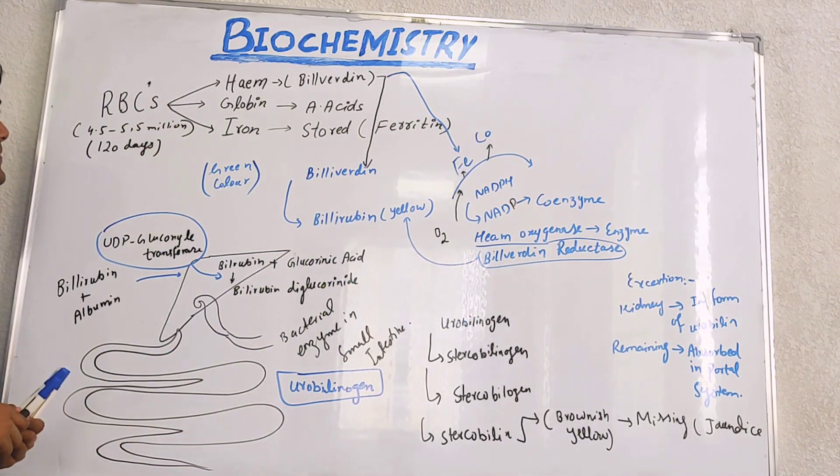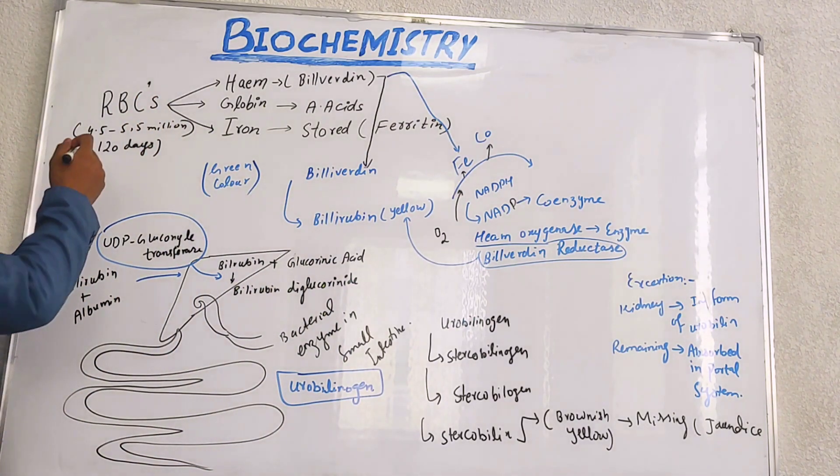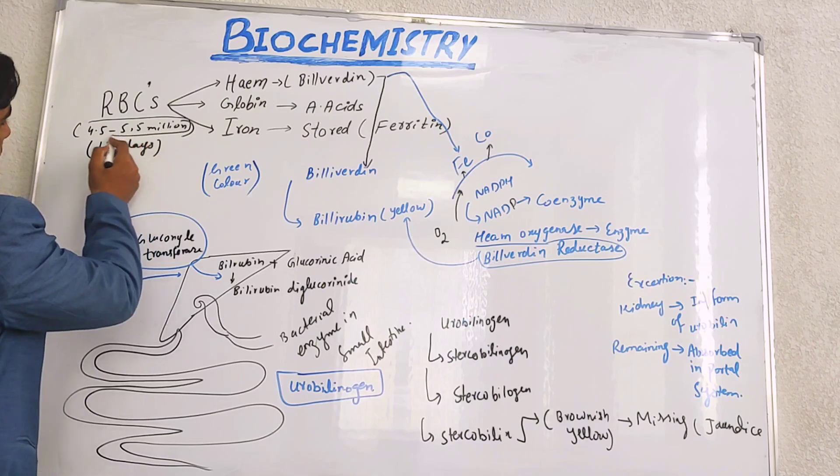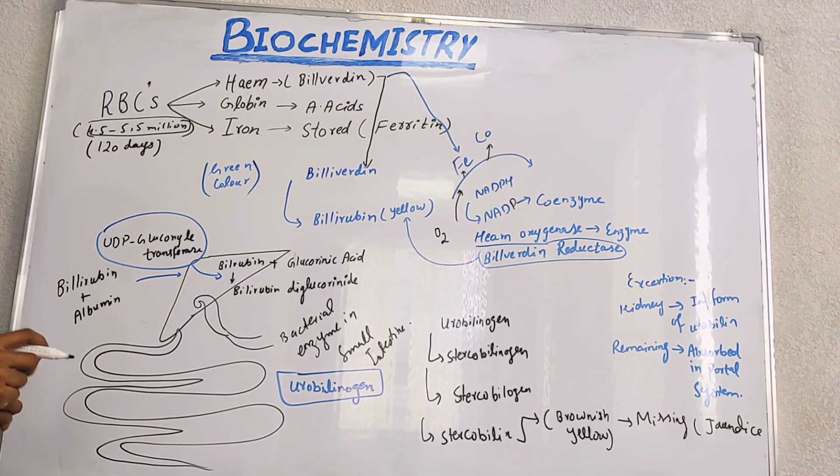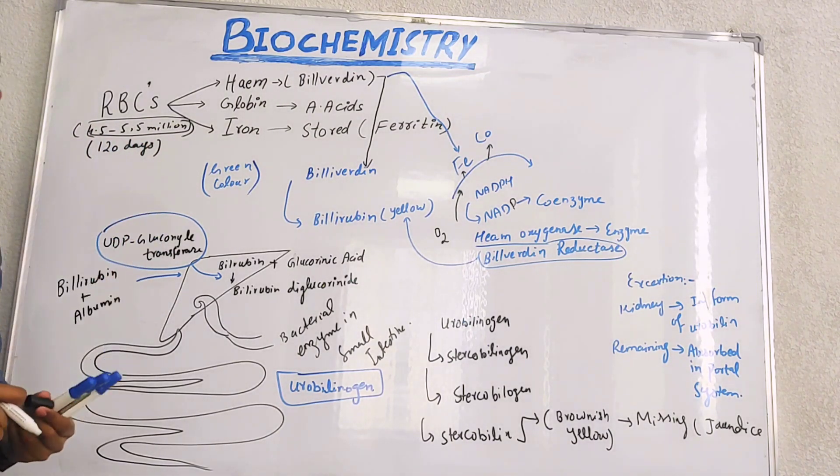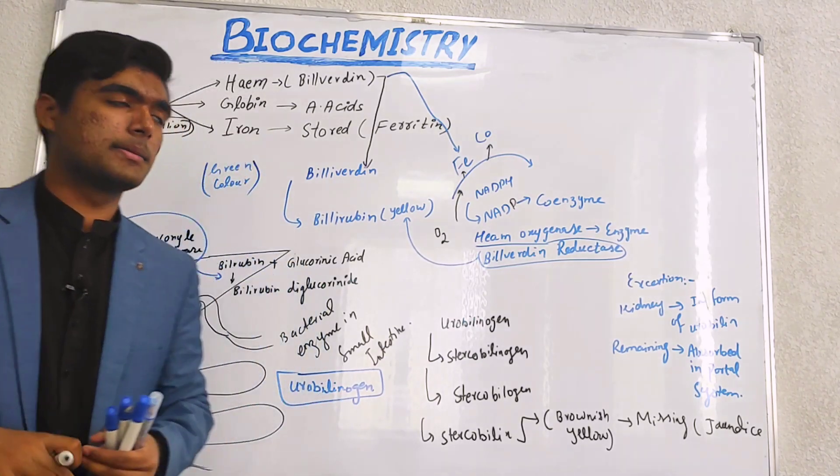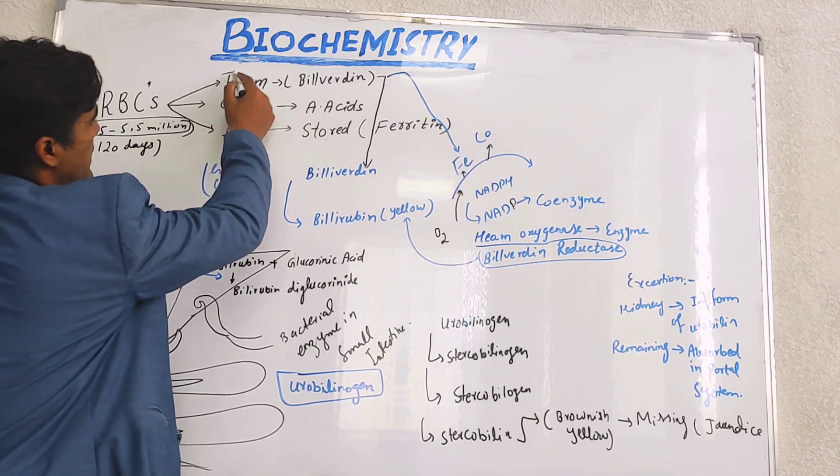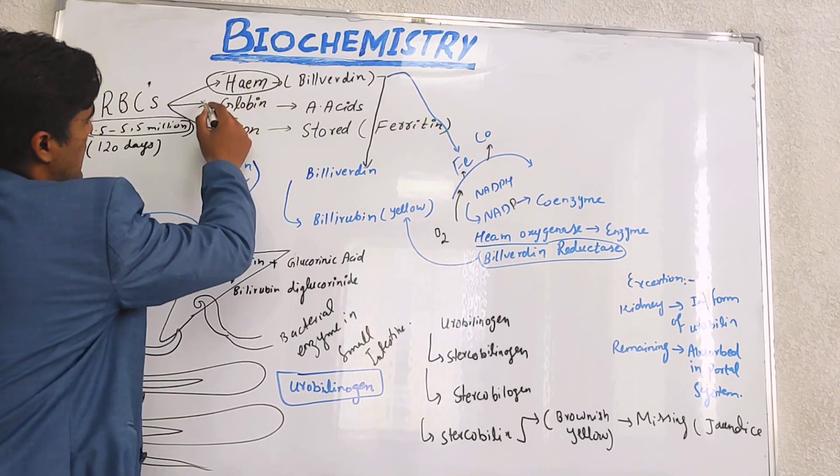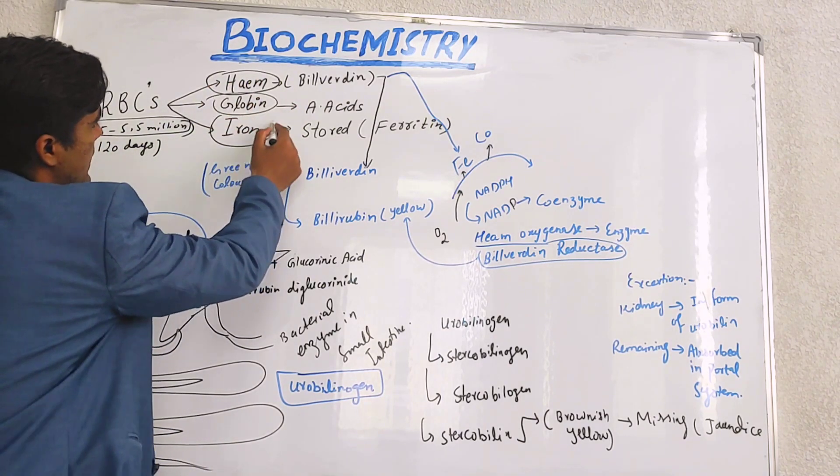As we are well aware, RBCs are 4.5 to 5.5 million in number and have a lifespan of 120 days. After 120 days, they start decaying. They will convert into three main forms: heme, globin, and iron.